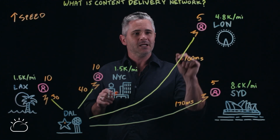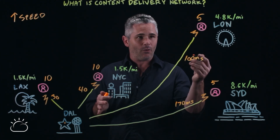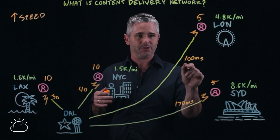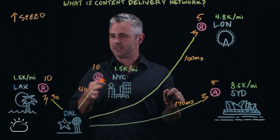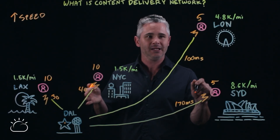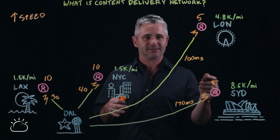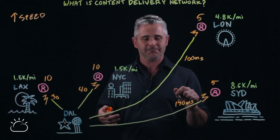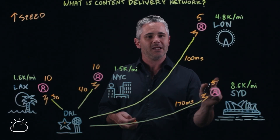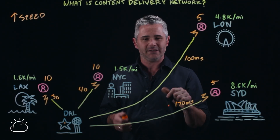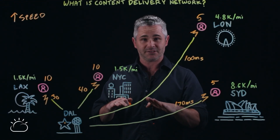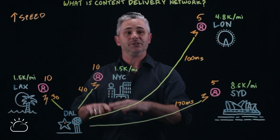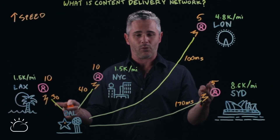Now when the user in Sydney, London, New York City, or LA tries to access some content, it's first retrieved by the content delivery network service and then distributed around the world.